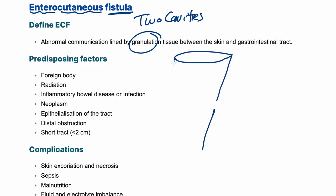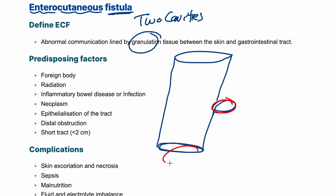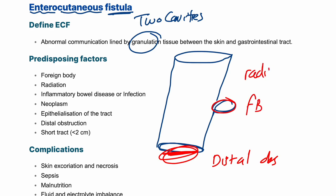Risk factors include a wound, disease leading to perforation, or anastomosis. Specifically, the presence of a foreign body around the fistula increases the risk, as does distal obstruction, exposure to radiation or radiotherapy, the presence of neoplasm, and Crohn's disease.